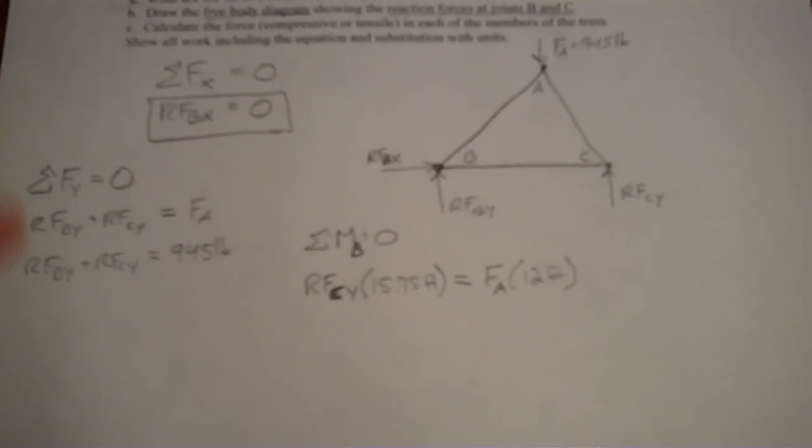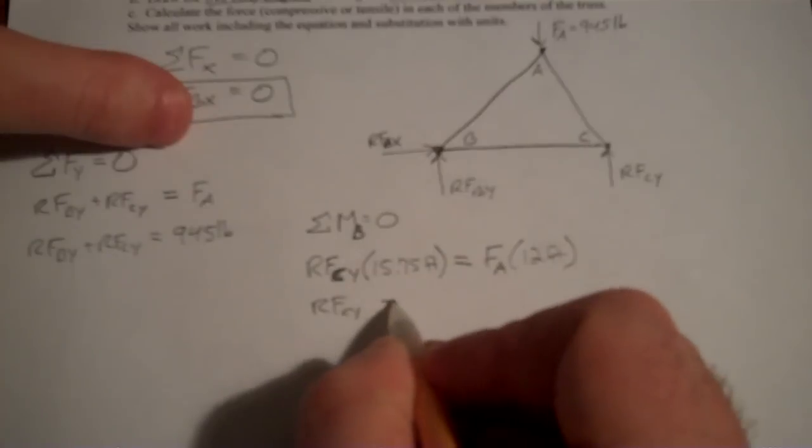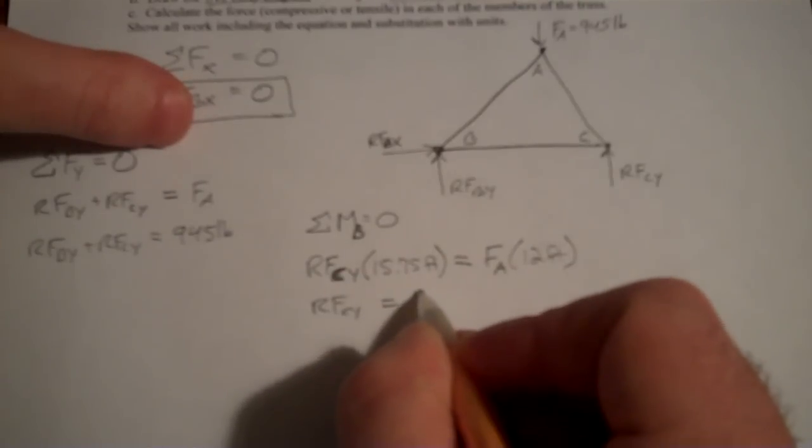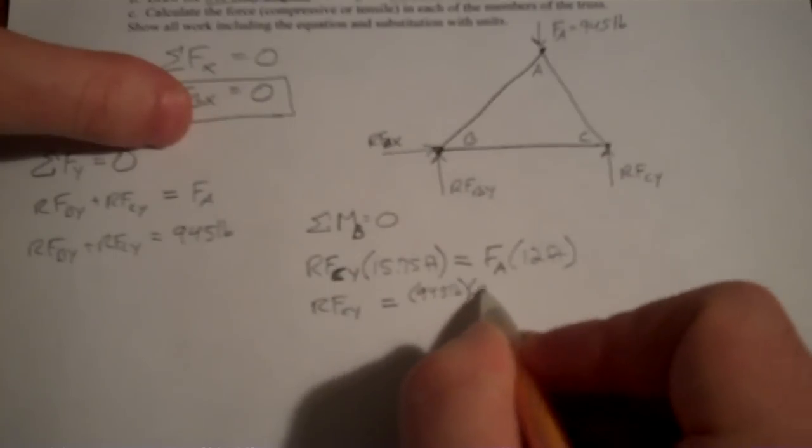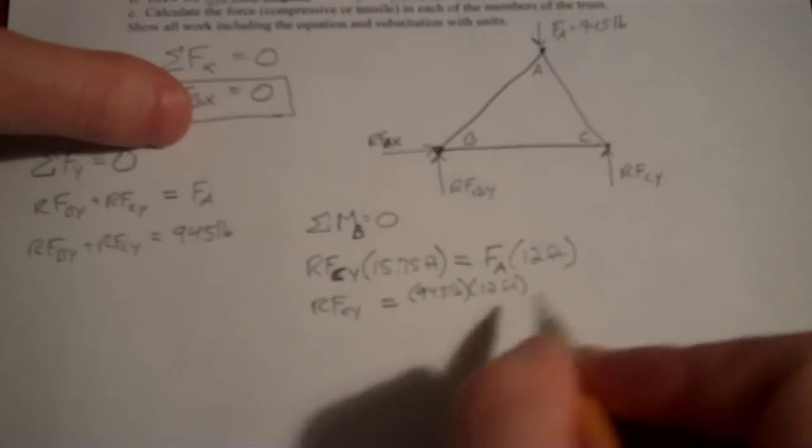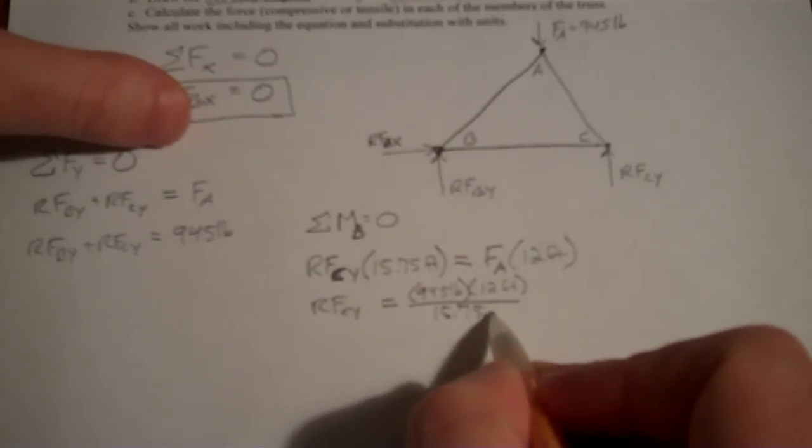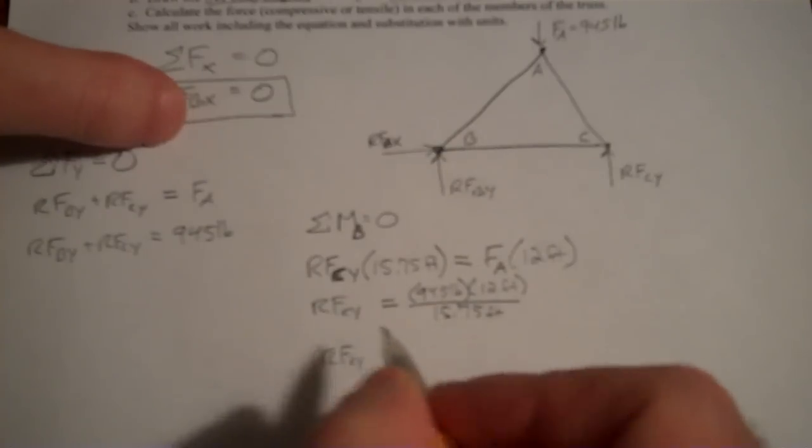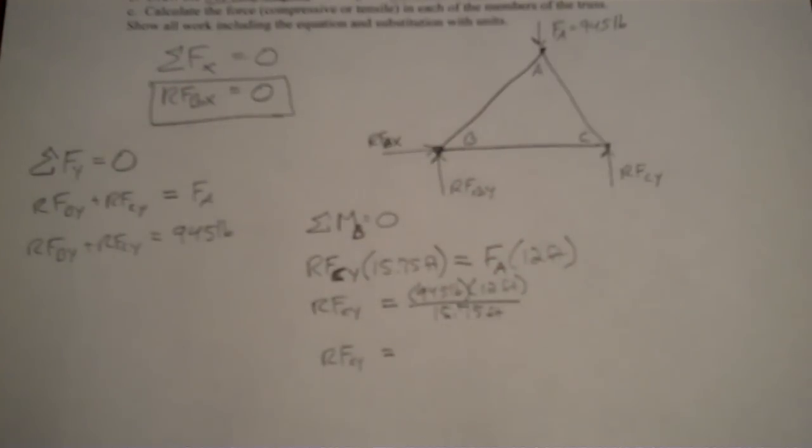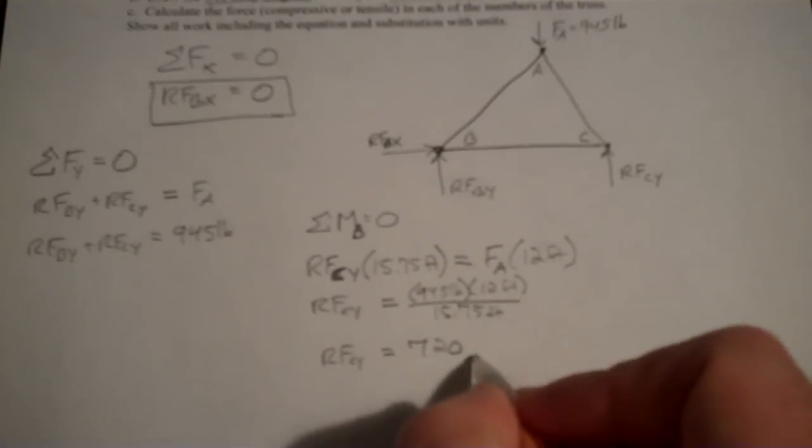Now, I can solve for RF,C,Y. If I have F,A, which is 945 pounds, times the 12 feet perpendicular distance, divided by the 15.75 feet, that I can move over from the other side, that would tell me that RF,C,Y is equal to, which is in my calculator, RF,C,Y is actually 720 pounds.